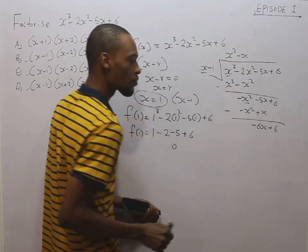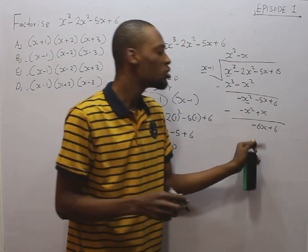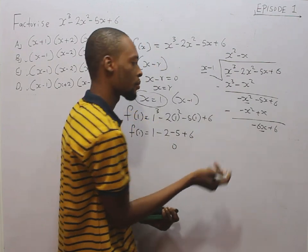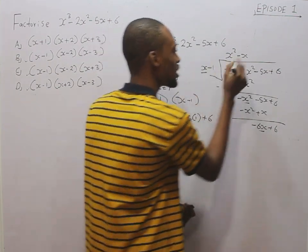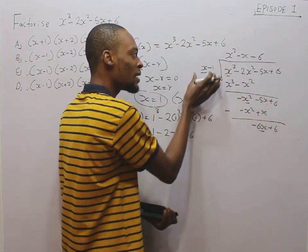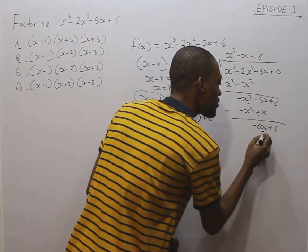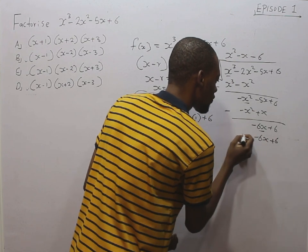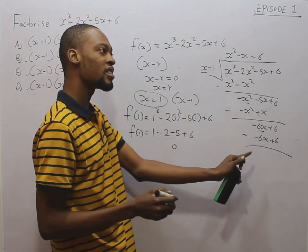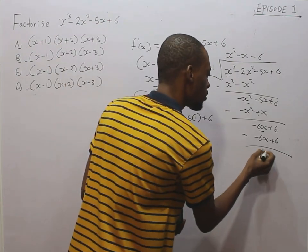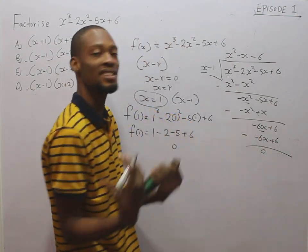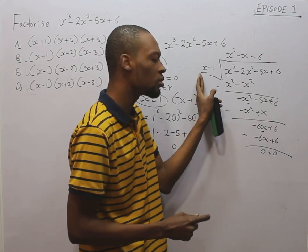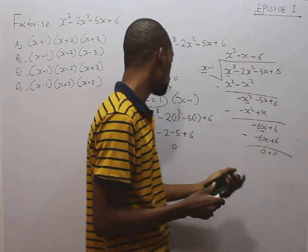We still have s here, so we follow the same pattern. Minus 6s divided by s is minus 6. Using minus 6 to multiply everything: minus 6 times s is minus 6s, minus 6 times minus 1 is plus 6. Subtract: minus 6s minus minus 6s is 0, and plus 6 minus plus 6 is 0. The remainder is 0, so this is a factor. From this long division, we get the other two factors from the quotient s squared minus s minus 6.